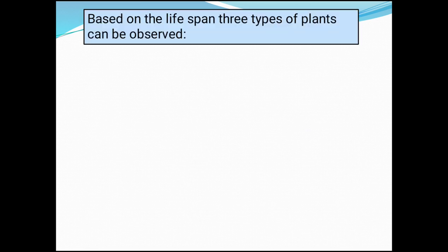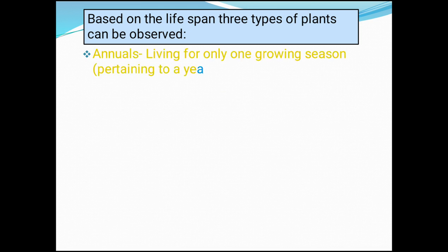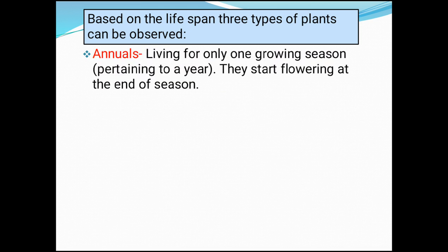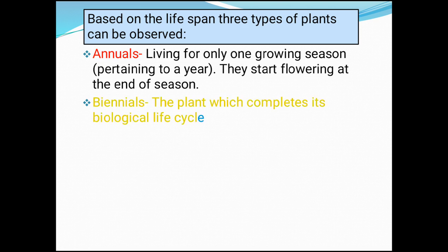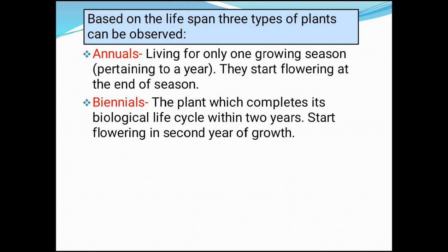Based on the lifespan, there are three types of plants. The first one is annuals — these are plants living for only one growing season, pertaining to a year, and they start flowering at the end of the season. The second one is biennials — plants which complete their biological life cycle within two years and start flowering in the second year of growth. And the third one is perennials — plants that live for a number of years and have a permanent aerial form which continues to grow year after year.